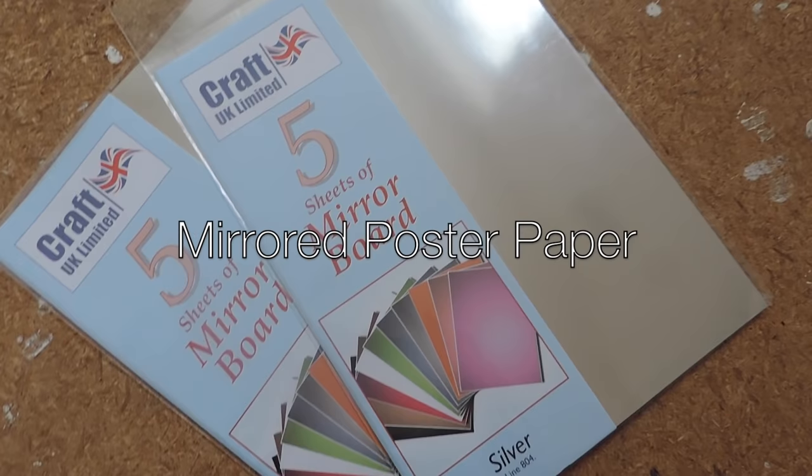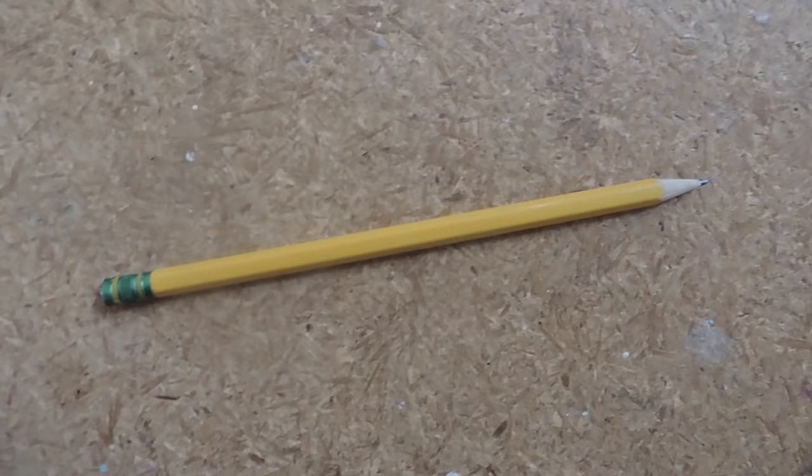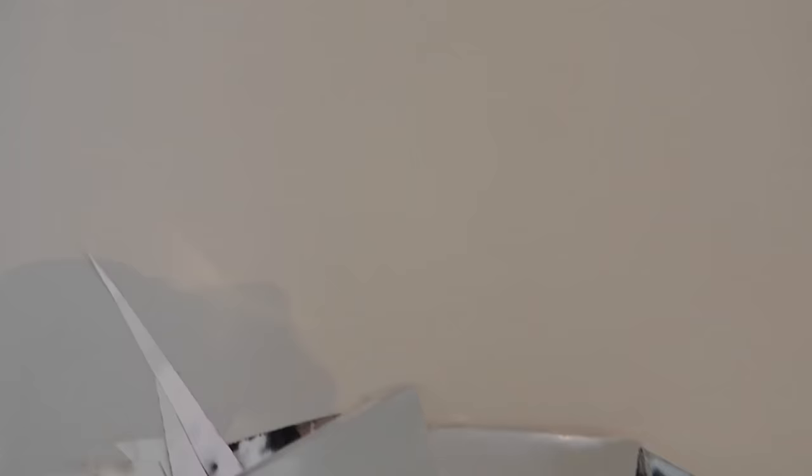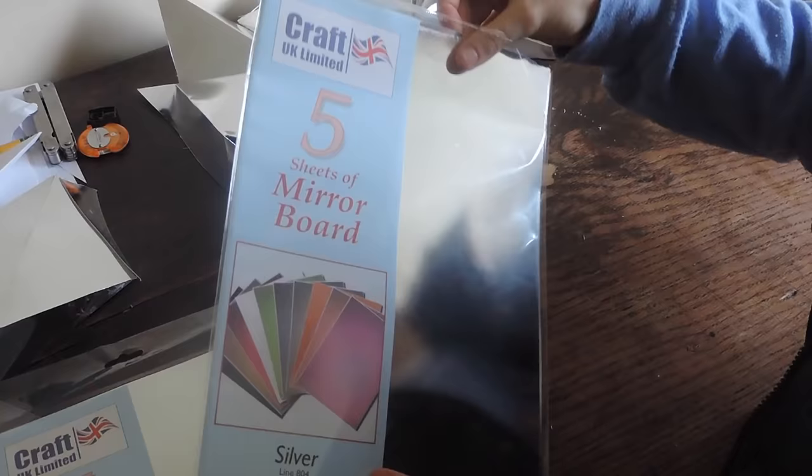Okay, what you're going to need for this DIY is this mirrored poster paper that I got on a craft site called Happy Hippo, a scalpel, pencil, and this fast grab glue that I also got from the Happy Hippo website. Now let's go.